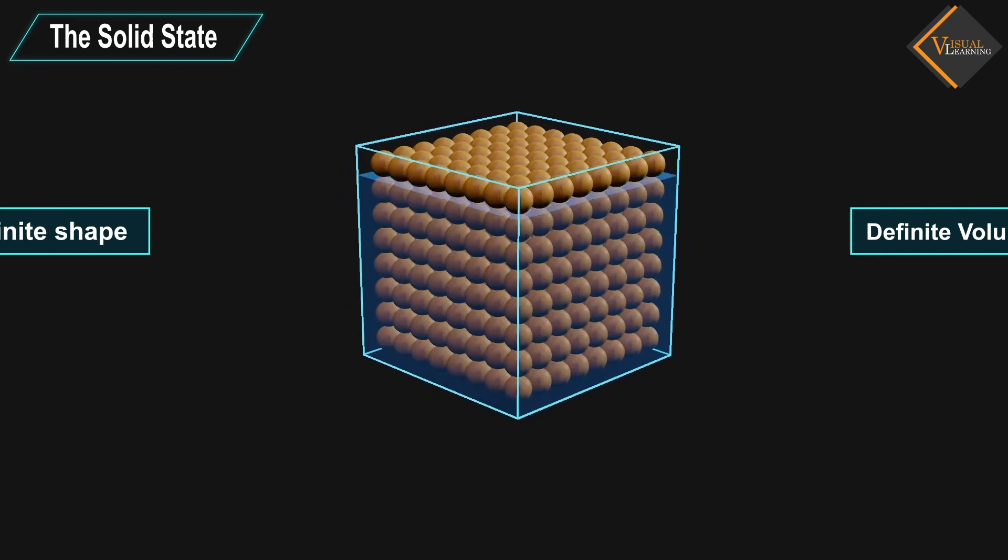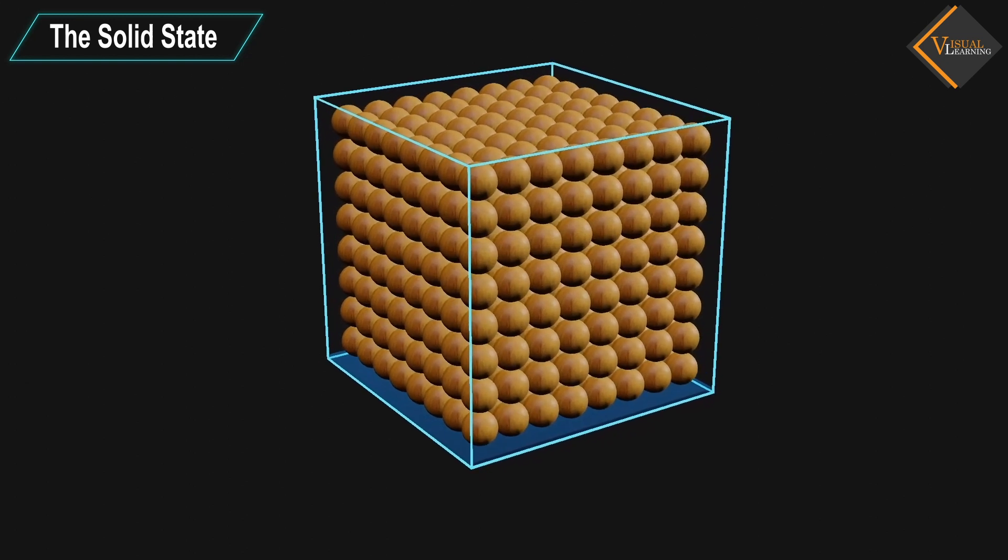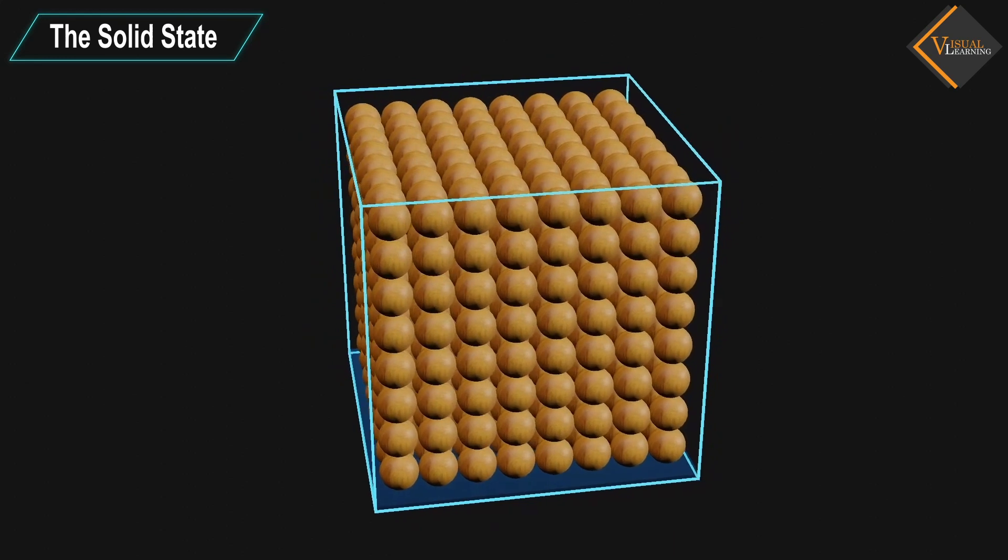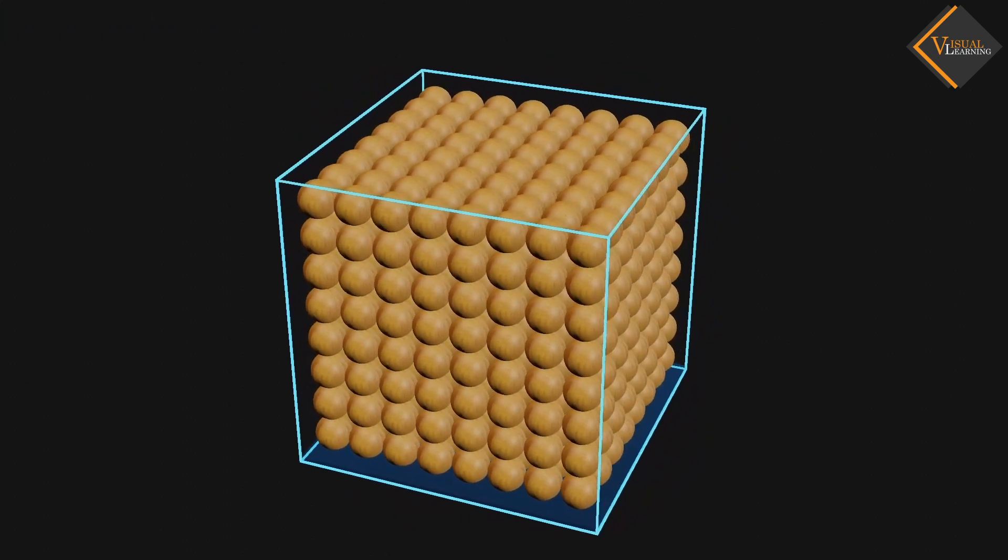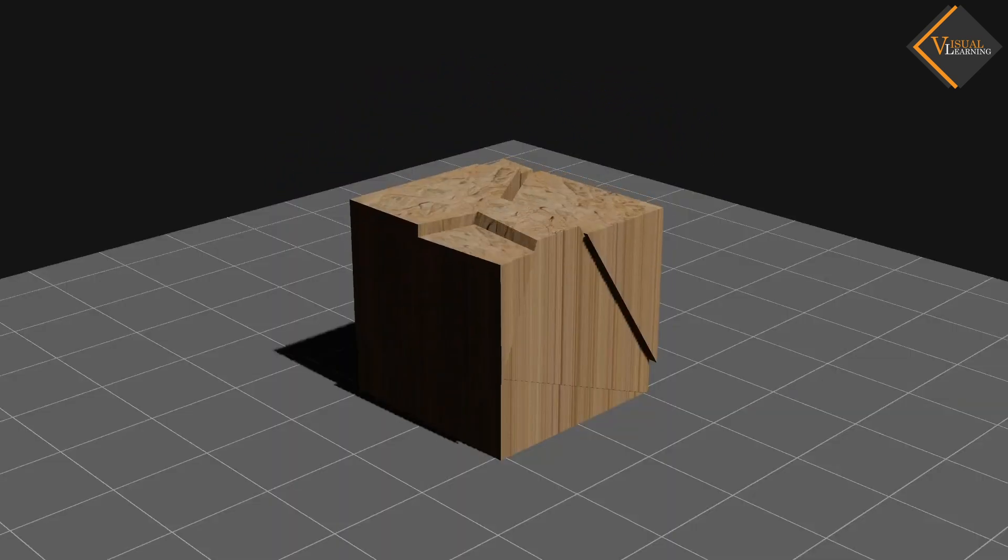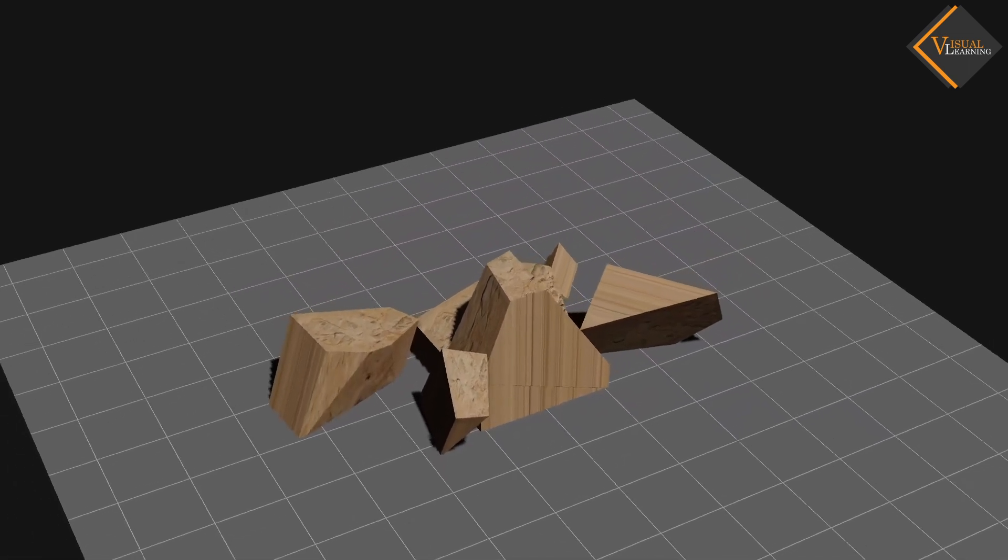The particles in a solid are tightly packed. Particles in solid are arranged in a particular manner so that there is very less space between the particles. Solids may break under force but it is difficult to change their shape.